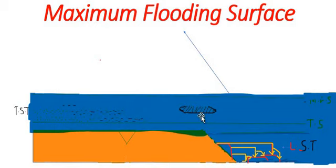Condensed sections are easily identified and correlated. The maximum flooding surface always lies above the condensed section.